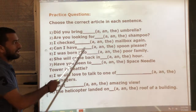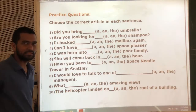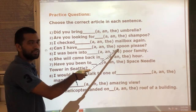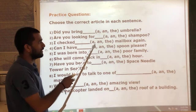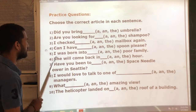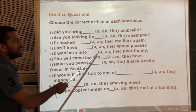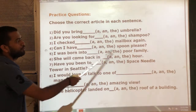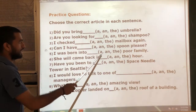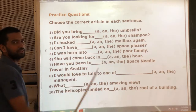Next: 'Can I have ___ spoon please?' Here it is a consonant sound, so 'a' is the correct answer. Can I have a spoon please? Next: 'I was born into ___ poor family.' It is a consonant sound, so 'a' is the correct answer. I was born into a poor family.